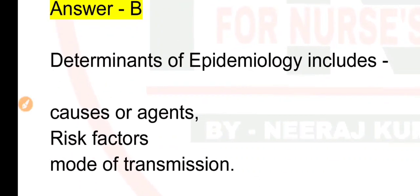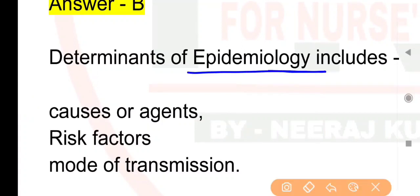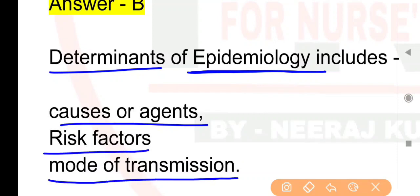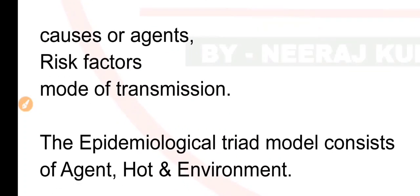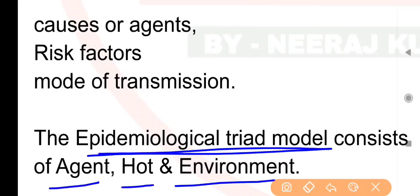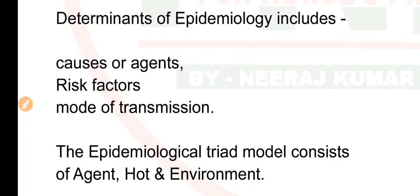Aaye is poore confusion ko clear karein. Epidemiology ke determinants mein teen naam yaad rakhein: pehla hai cause ya agent, doosra hai risk factor, aur teesra hai mode of transmission. Vahi agar epidemiological triad model mein kise include kiya jata hai, toh answer hai: agent, host, and environment. Exam mein triad sabse important, second determinants, third definition. Take a screenshot for revision.